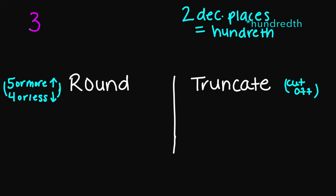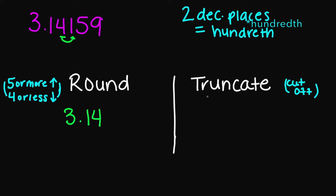Let's try 3.14159. Two decimal places puts me right here. If I look next door, I have a 1, which is four or less, so I'm rounding down. If I had to round this number, I would get 3.14. And if I had to truncate this number, it would also give me 3.14.